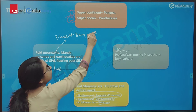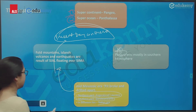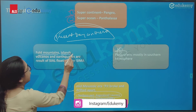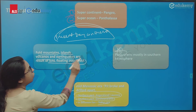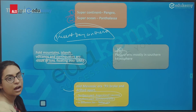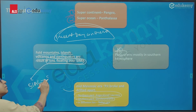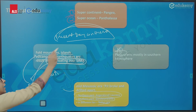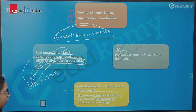As the continents were moving, they formed various features like fold mountains, islands, volcanoes, and earthquakes — because the crust was floating over the sima. As the continent was moving over the sima, it formed these various geological features like fold mountains, islands, volcanoes, and earthquakes.